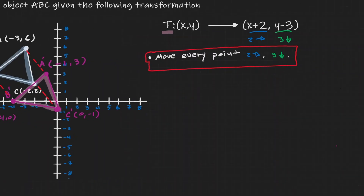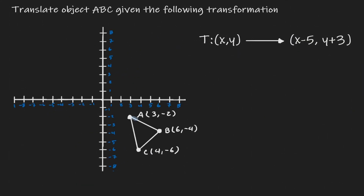Let's take a look at another example. So here we have triangle ABC, and by the notation, notice that it's capital T, so we know we want to perform a translation. Notice that in the image, we're subtracting five from x, so we have a horizontal movement of five units to the left, and we're adding three to y, so we're moving three units up. So what this translation is going to do is get every single coordinate point and move it five units to the left and three units up.